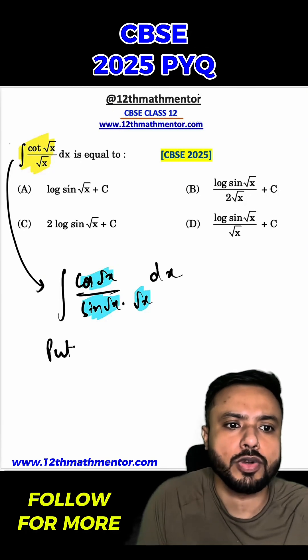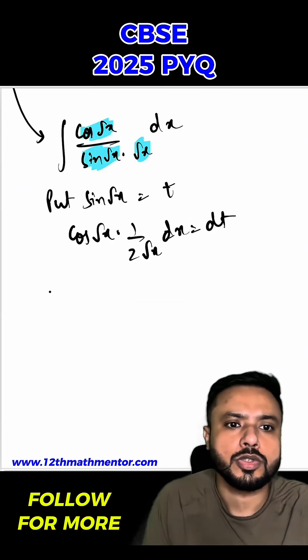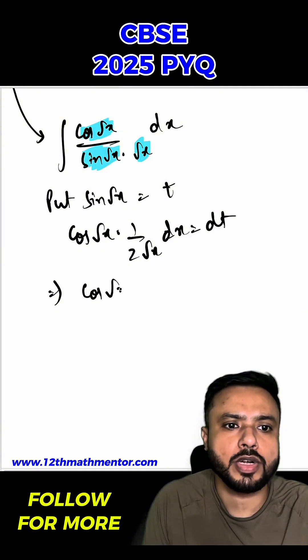So I'm going to put sin of root x as t. When we differentiate it, I will get cos of root x into 1 by 2 root x dx equal to dt. From here I can say that cos of root x by root x is equal to 2 dt.